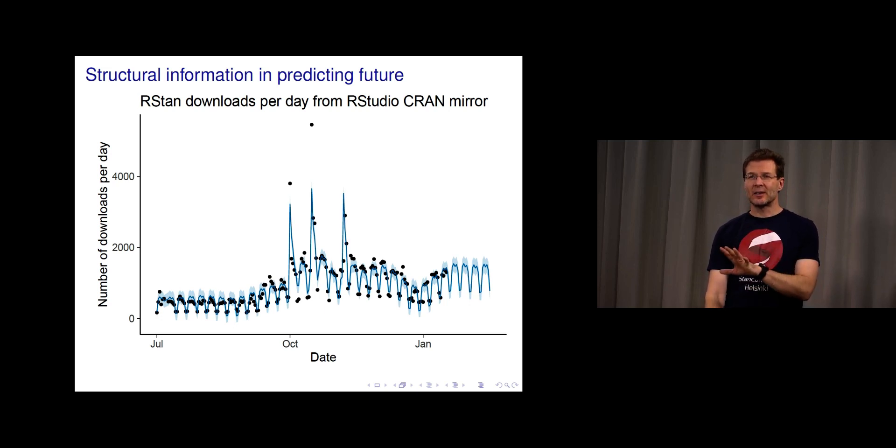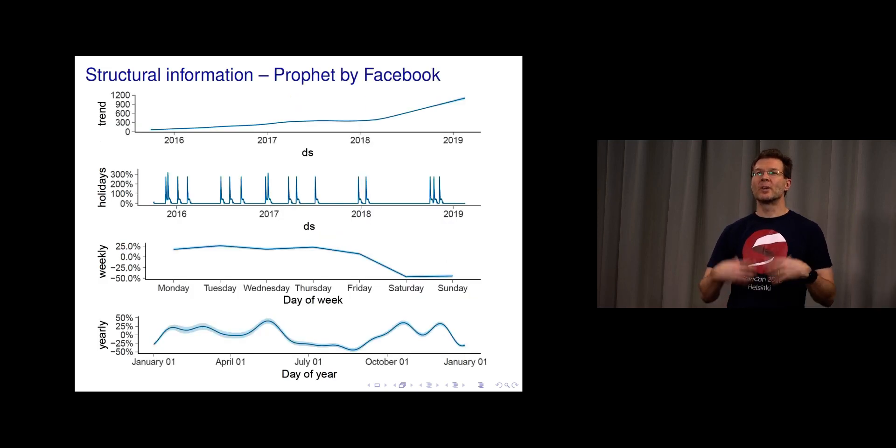You can see this jumpy pattern, and the light blue is showing the uncertainty. We can quantify the uncertainty, which could be useful, for example in a store, determining how many products need to be available for customers or how many customer service people need to be there. The blue line has a lot of structure. In this case, the model has different components.